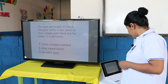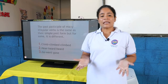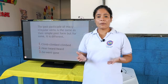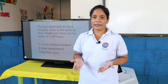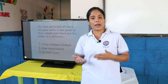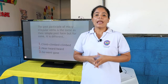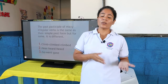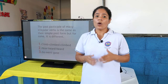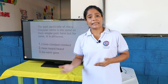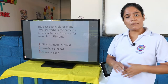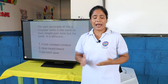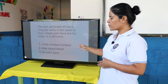The past participle of any irregular verb is the same as their simple past, or another one's just changed. El pasado participle de los verbos son iguales al pasado simple de un verbo, pero algunos sí van a cambiar. Let's see some examples that we can have of some verbs. We have three here.